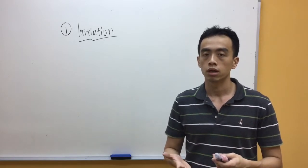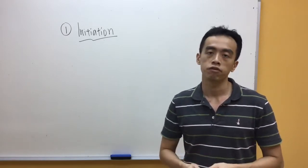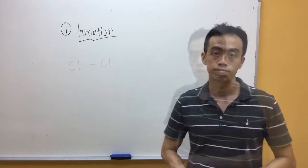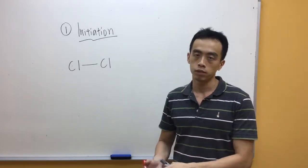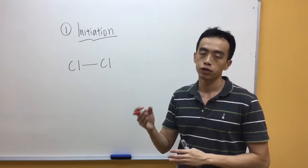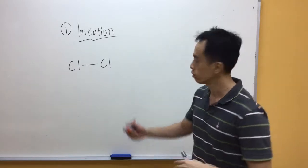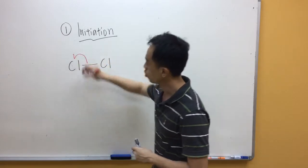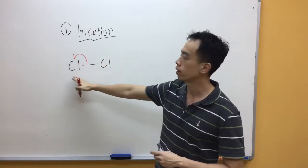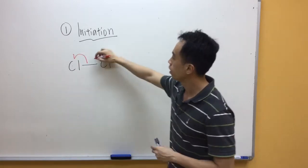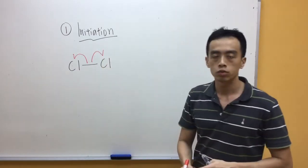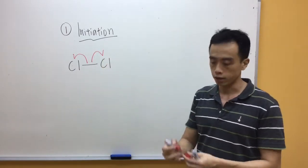which involves the homolytic fission of my Cl-Cl bond. Now we show the homolytic fission of my Cl-Cl bond by using half an arrow to show the movement of one electron. So one electron in this covalent bond will go back to the Cl on the left hand side, and the other electron will go to the Cl on the right hand side.